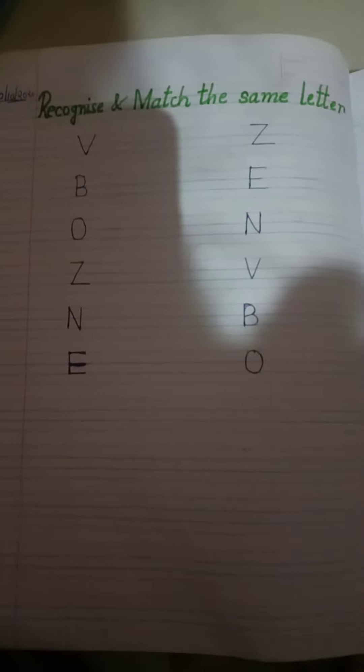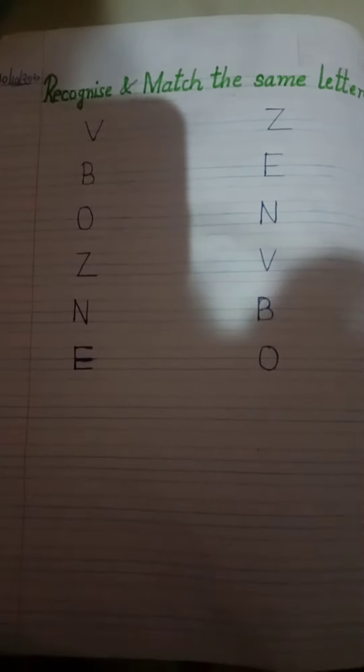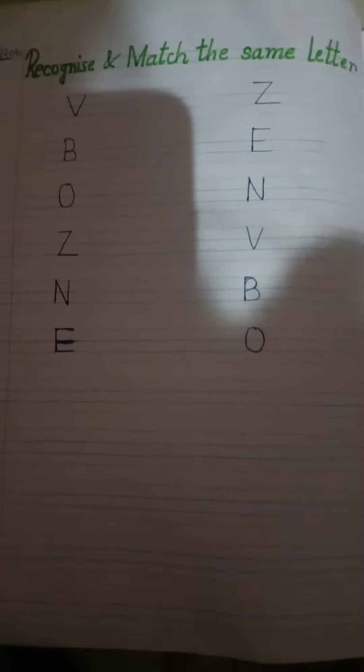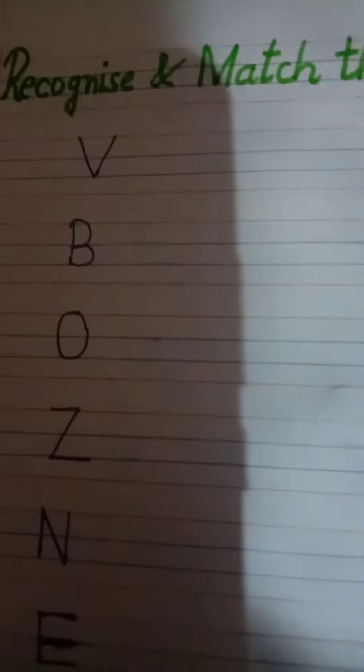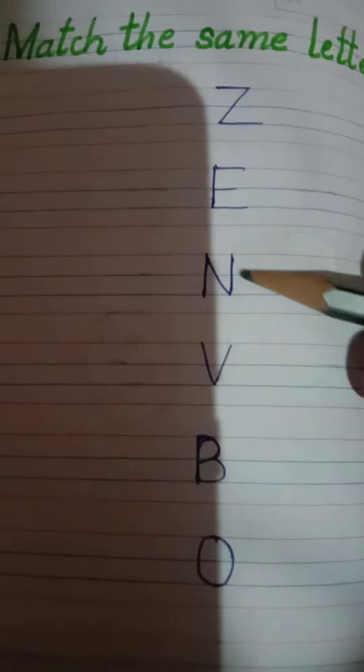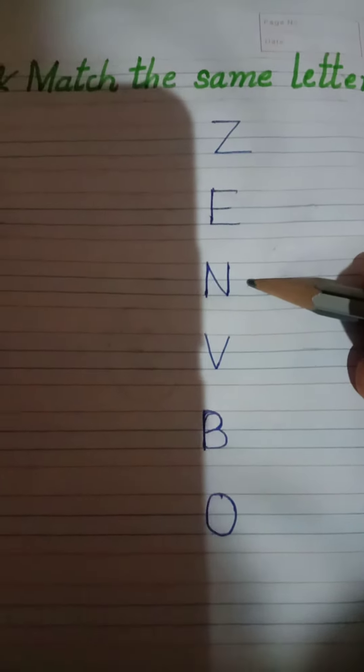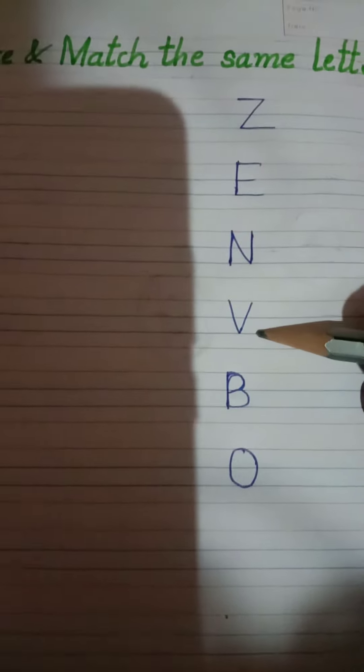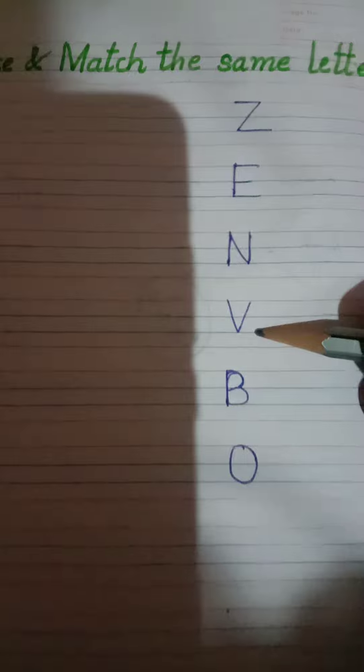Kids, recognize and match the same letters. We have to recognize the letters and then match with the same letters. Let's start — one slanting line and one more slanting line. Which letter is this? It's a letter V. Yes, it's a letter V! So match the letter V with letter V.